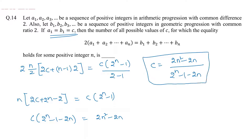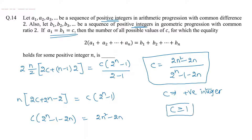Both progressions contain only positive integers, and c is the first term of both sequences, so c must also be a positive integer. This means c ≥ 1. So we have two conditions: the summation relation giving us c, and the constraint that c must be a positive integer.